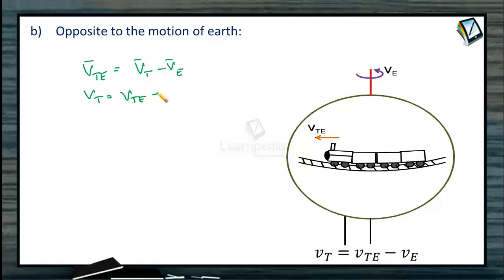Velocity of train will be velocity of train with respect to earth minus velocity of earth. VT = VTE - VE. Here the opposite direction is there, so we just have to take the relative part.